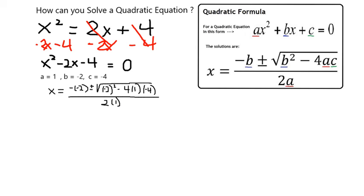So I get 2 radical 5, because it was 4 times 5, which was equal to the square root of 20.